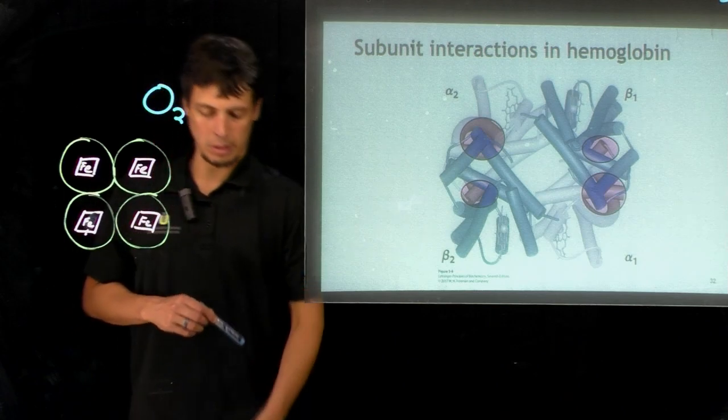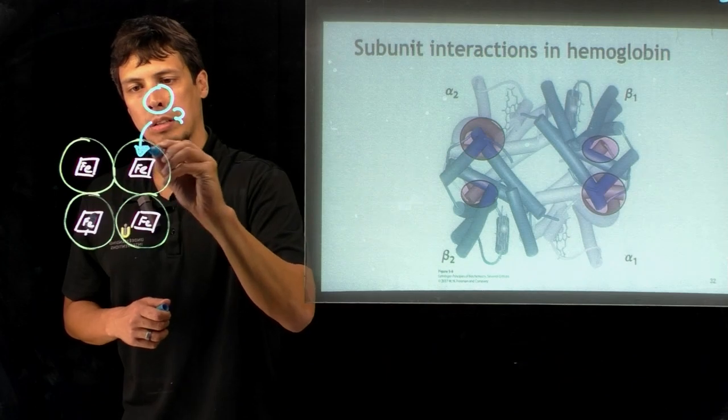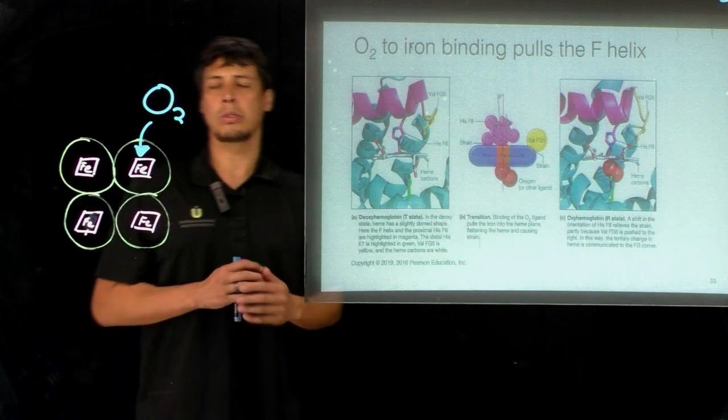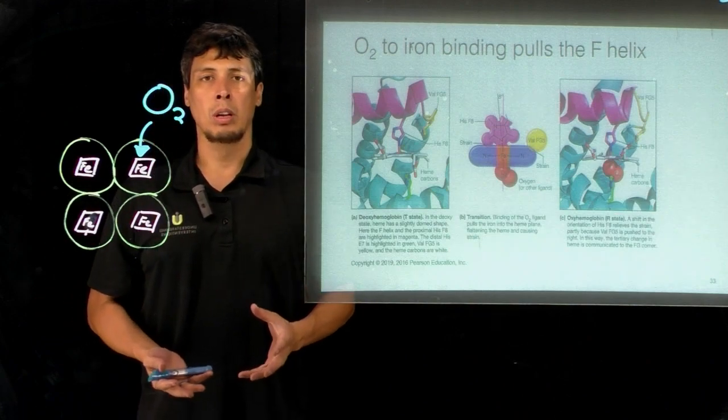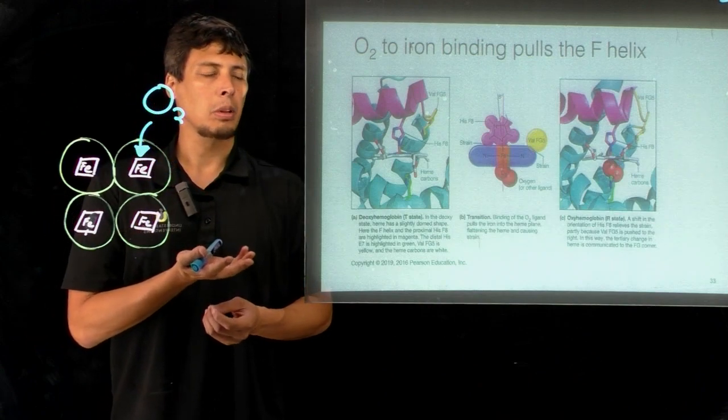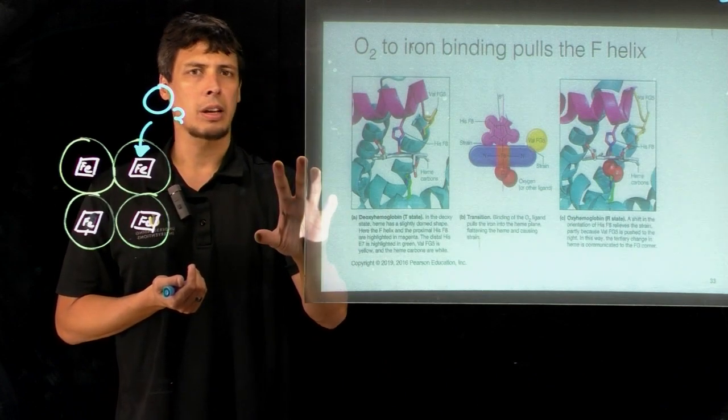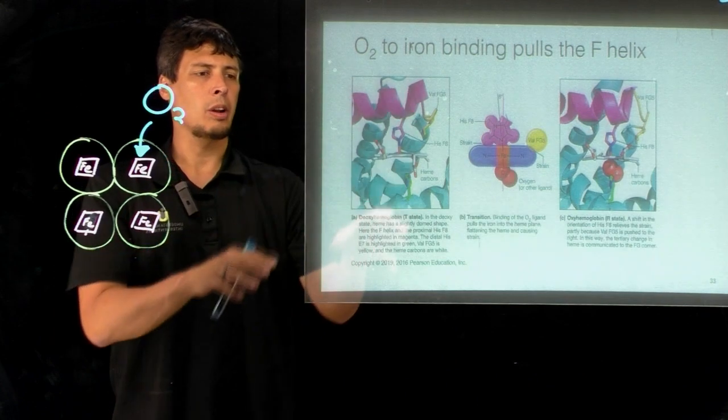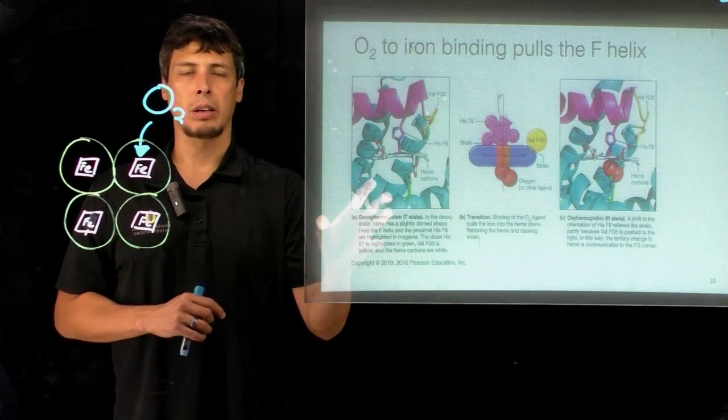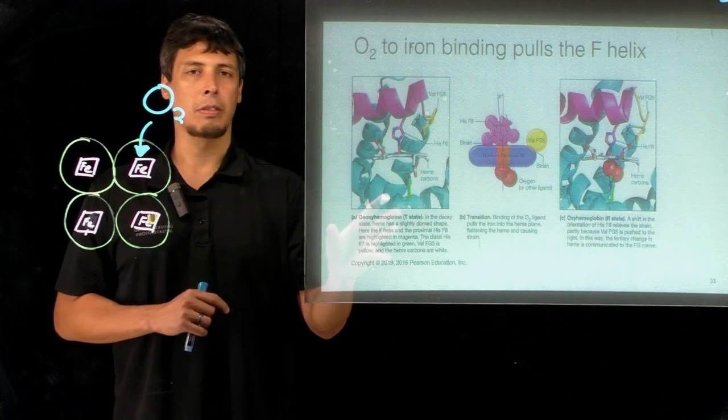The first thing that happens is O2 binds, which initiates the start of the signal. This binds at the iron, and when there is no oxygen bound to the heme, the iron is slightly out of plane from the plane of the heme. In this panel on the left hand side, this is a diagram of deoxyhemoglobin, so there's no oxygen bound to this particular ligand binding site. This is just one of the ligand binding sites as a representative form.